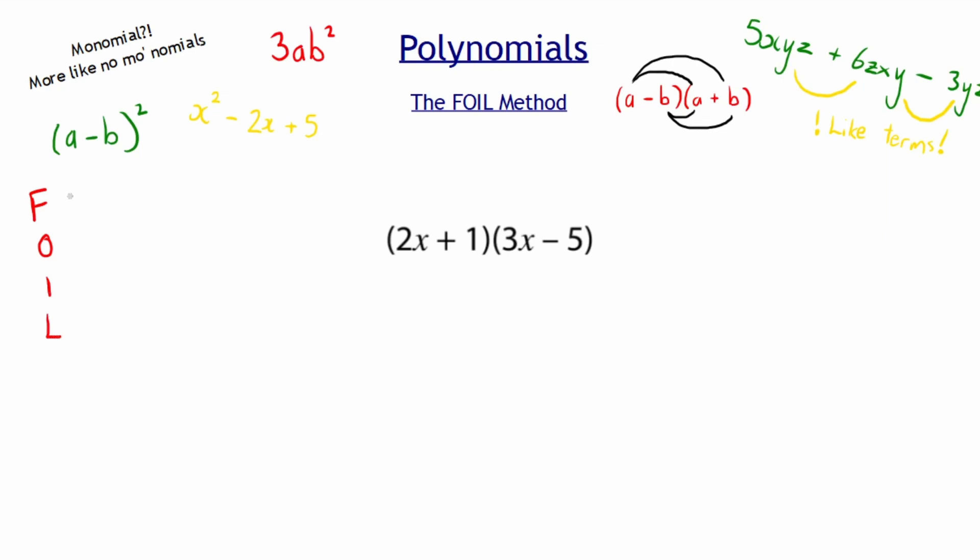F means firsts, and what that means is I need to multiply the first term in the first bracket with the first term in the second bracket. What is that going to give me? Well, 2x multiplied by 3x. Reminding ourselves, coefficients multiply and variables multiply, so x multiplied by x is x squared. So that was our firsts.